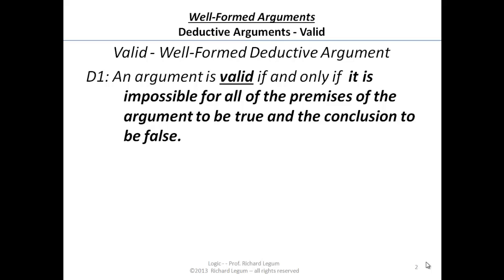Notice what this is saying: it's not saying that the premises are true, and it's not saying that the conclusion is true. It's saying that it's impossible for two things to be the case simultaneously if the argument is valid — impossible for all the premises to be true and at the same time the conclusion false. We'll spend a little time on the next slide explaining what precisely we mean by 'possible.'